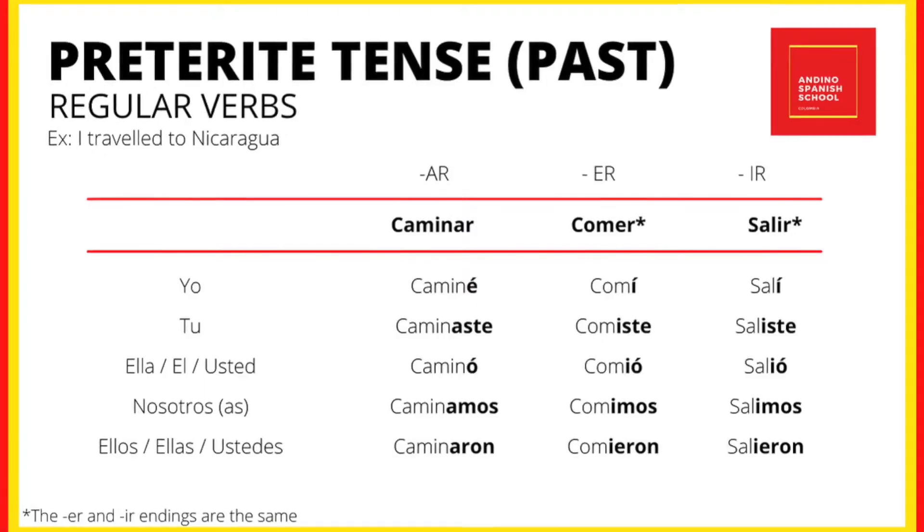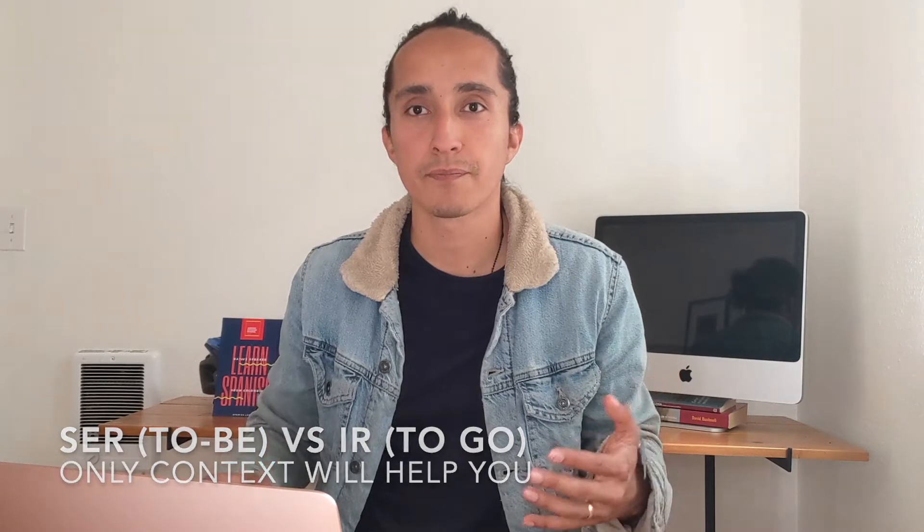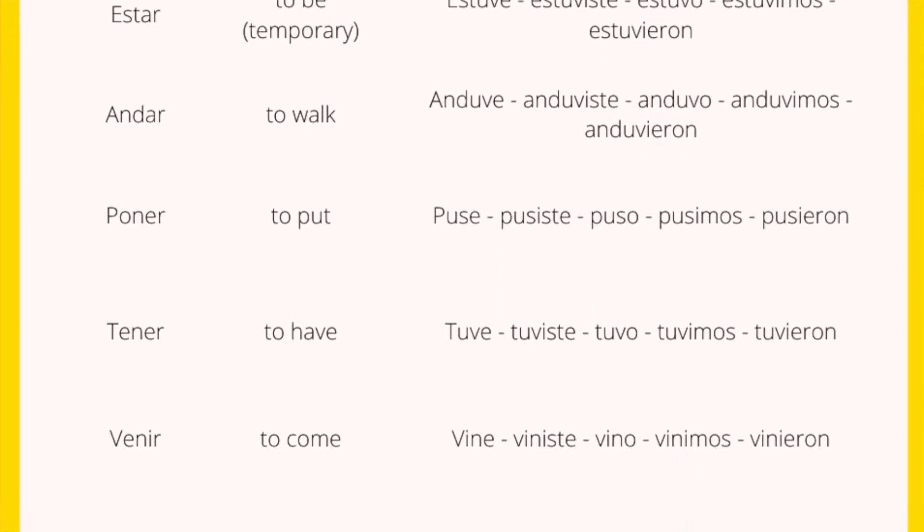Notice that the ER and IR endings are the same, so there are basically only two rules: AR and one rule for the other two. But what about irregular verbs? Like in English, irregular verbs follow their own rules. Both the verb SER and the verb IR have the exact same conjugation in preterite. Other verbs like DAR (to give) and SABER (to know) are also irregular. We have created a list of irregular verbs you can check out and download for free at andinoespanishschool.com/learn.